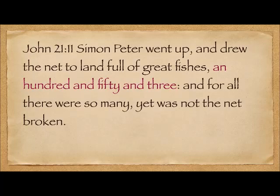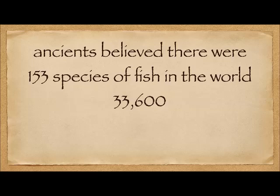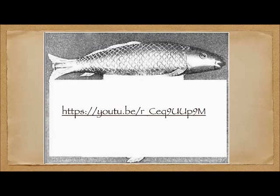The verse we're talking about is John 21:11: 'Simon Peter went up and drew the net to land full of great fishes, 153. And for all there were so many, yet was not the net broken.' As we said, there's no wasted information in the Bible. The ancients believed that there were 153 species of fish in the world, but they were short by about 33,450 species. The Jewish people have always been associated with fish — you can check out this other video for more on that.